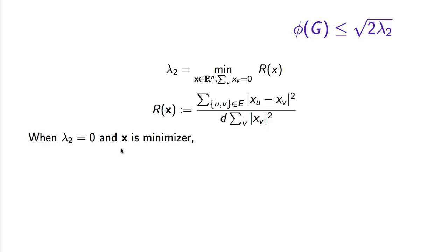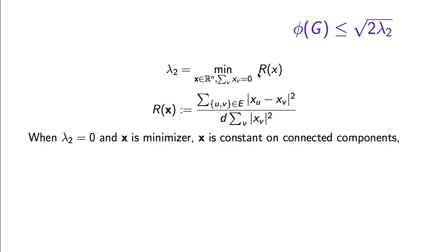Well, if lambda 2 is 0 and x is a minimizer of the Rayleigh quotient expression, so x is some vector for which the Rayleigh quotient of x is 0, that means this difference is 0 for every edge. Which means that if two vertices are connected by a path, the value of x must be the same at both vertices.